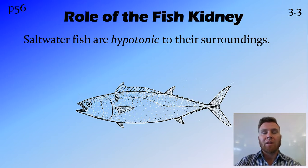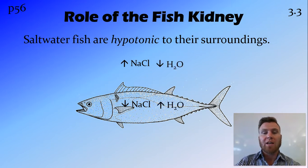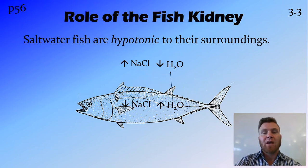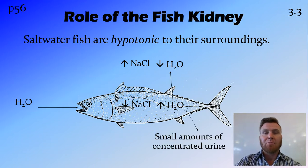Saltwater fish are exactly the opposite. They are hypotonic to their surroundings, meaning inside the fish has less salt than outside. If it's got less salt inside, it's going to have more water inside and less outside, creating a net movement of water out of the fish. This water is constantly moving out through the skin via osmosis, so the fish needs to drink lots of water to compensate, meaning only small amounts of urine are produced.